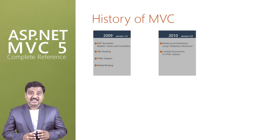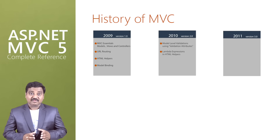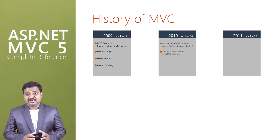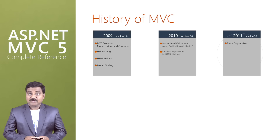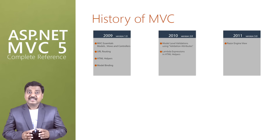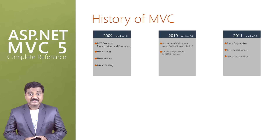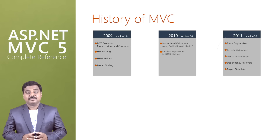ASP.NET MVC gained its popularity in 2011 with ASP.NET MVC 3.0, which had major changes in development — that is, use of Razor syntax, Razor view engine, remote validations, global action filters, dependency resolvers, and project templates.